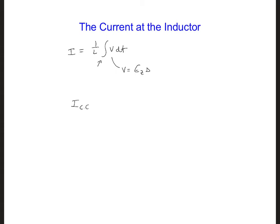So that means i, for our circuit element of an inductor, is going to be equal to delta over L. And then we're going to be summing ez across every time step, multiplied by delta t. The summation will go from m equal 1 to n, whatever time step we're at, and here will just be the ez component at time step m.